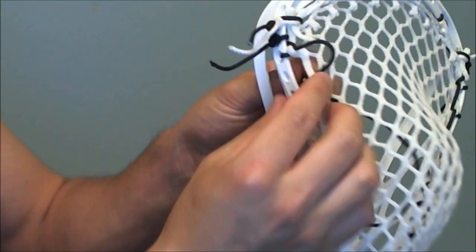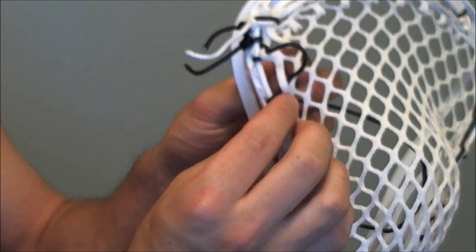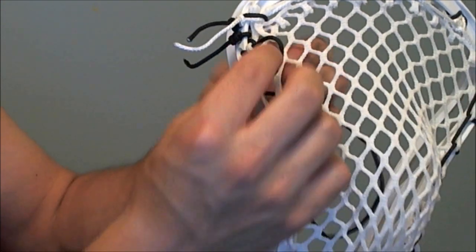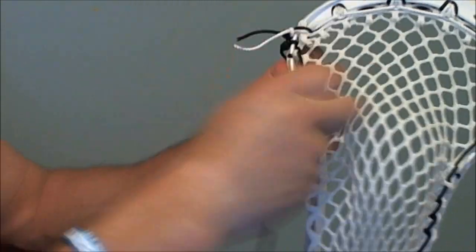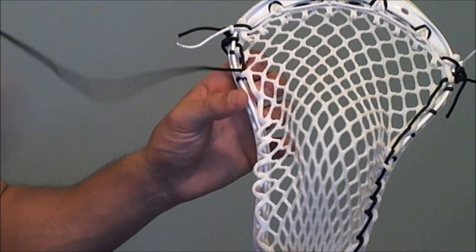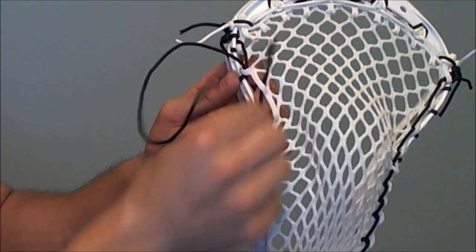And then to complete the SI we're going to take our string, see that little loop we created, come up, back through the mesh, under that little loop, and pull it nice and tight. So then we're going to skip yet another sidewall hole and do yet another SI.